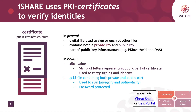iShare uses these PKI certificates to verify identities, where PKI stands for public key infrastructure. In general, such a certificate is a digital file used to sign or encrypt other files. It will contain both a private key and a public key and it is part of some public key infrastructure, for example PKI Overhead or EIDAS. In iShare we use two parts of this certificate mostly. You will need the x5c value, which is a string of letters representing the public part of the certificate, and we can use that to verify signing and identity. And the p12 file contains both the public and the private part — we can use this to sign messages and to provide integrity and authenticity. This part is usually password protected.